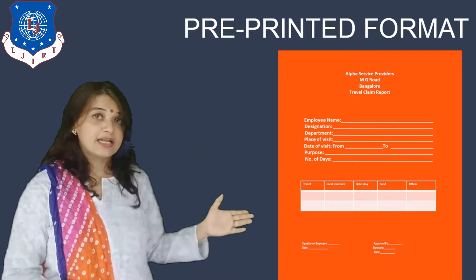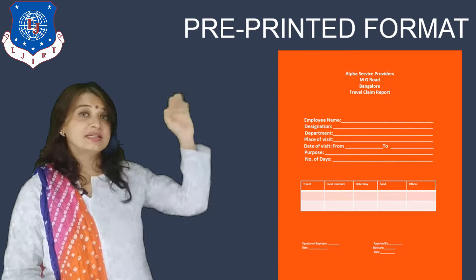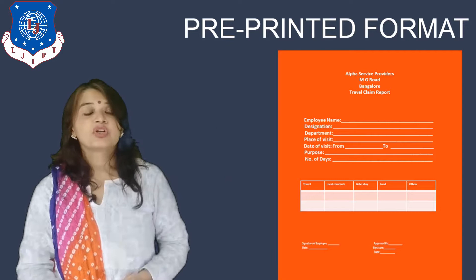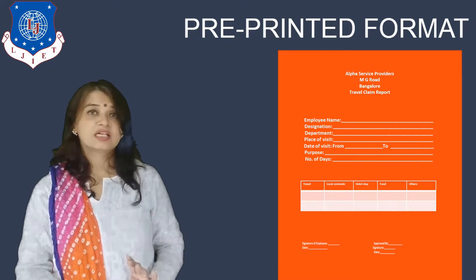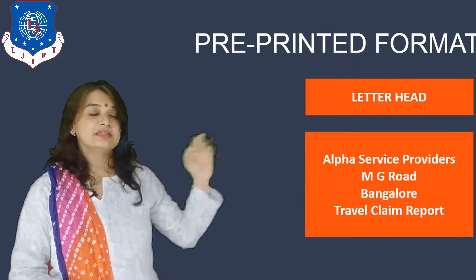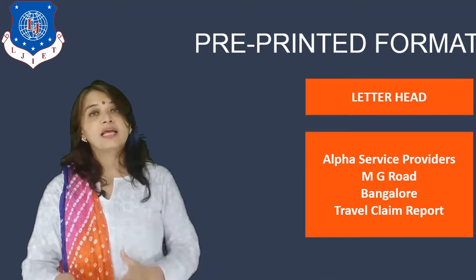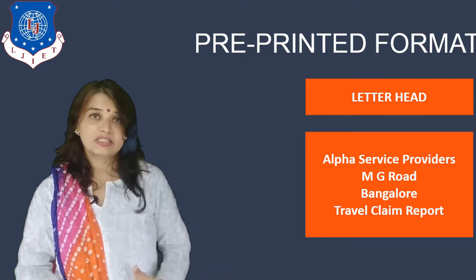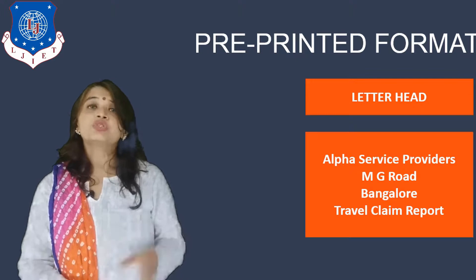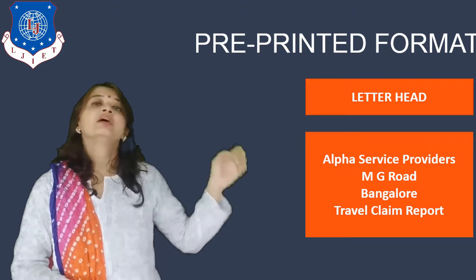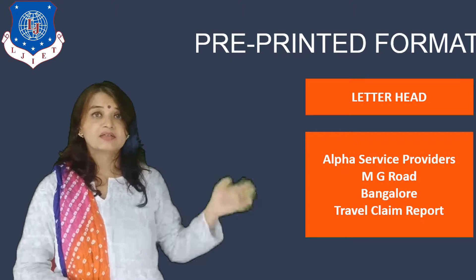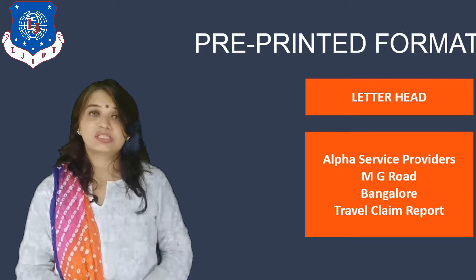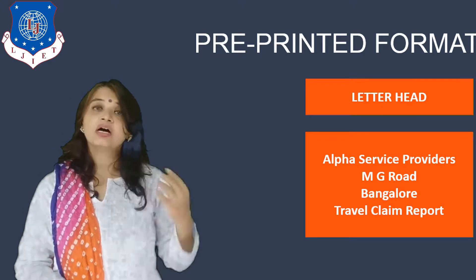This report has data which is fixed and required by the organization so that they can give the amount to the employee. Here you can have a look at this travel claim report which has certain headings and blanks which employees can fill up. The first element is the letterhead, which is the address and all contact details of the company. Here, as an example, we have taken the name of Alpha Service Providers, MG Road, Bangalore.